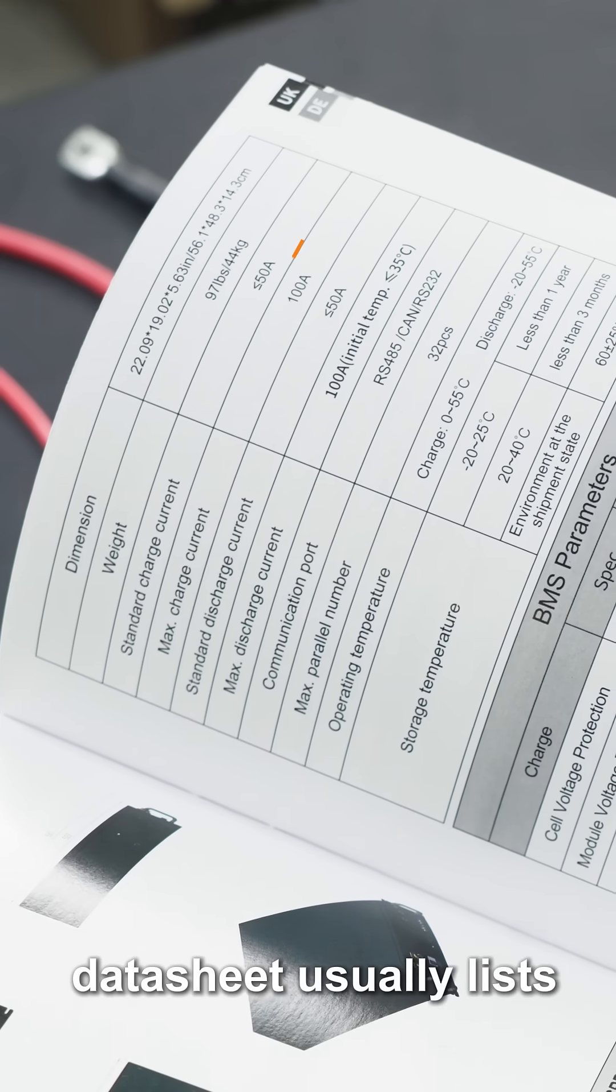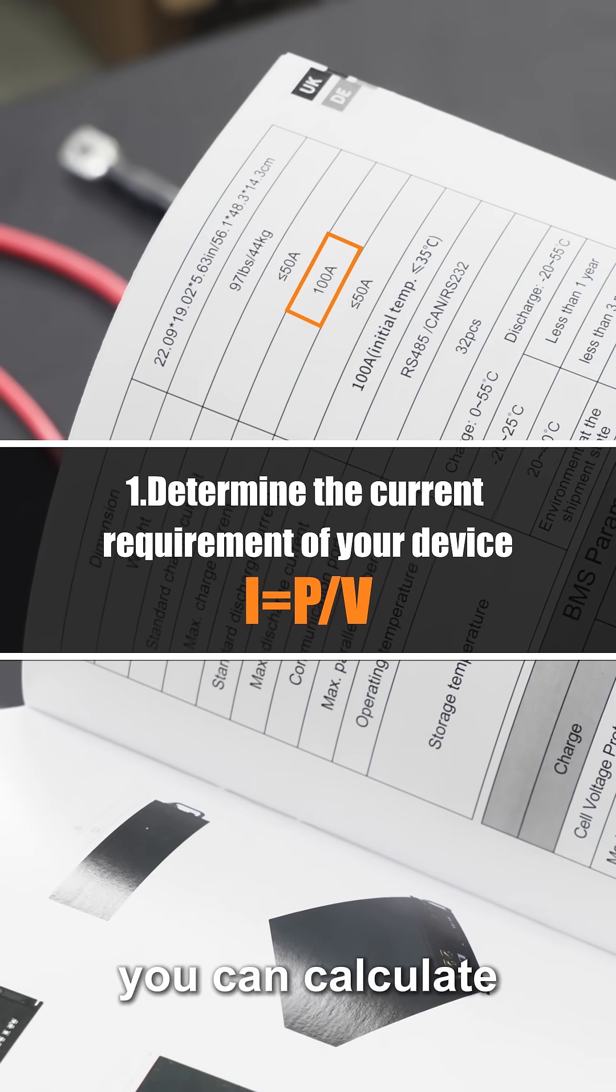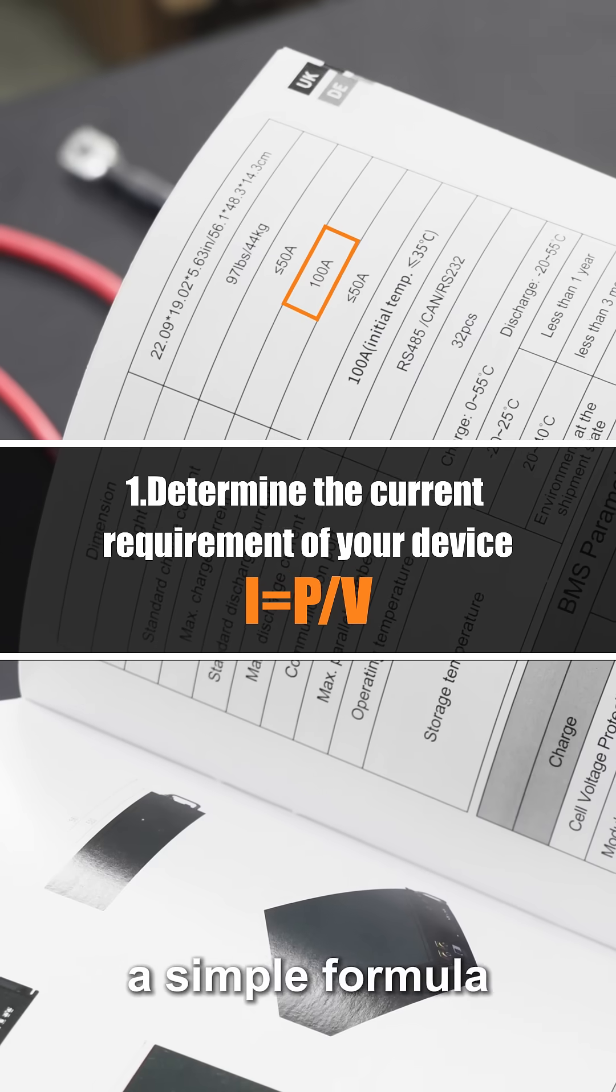The product manual or datasheet usually lists the current or power. If only the power is provided, no problem. You can calculate the current using a simple formula.